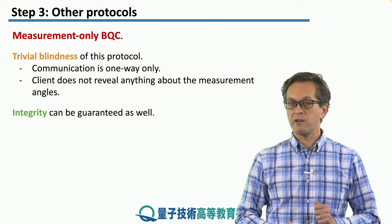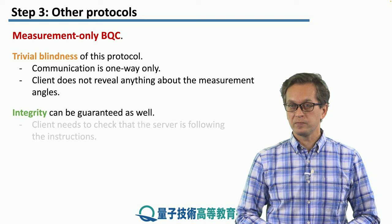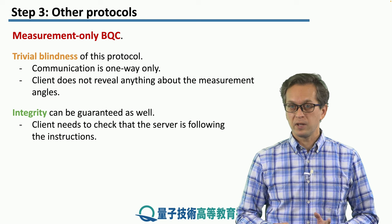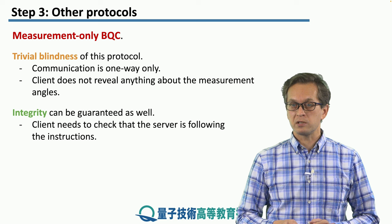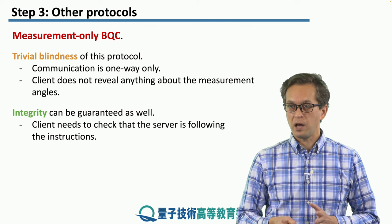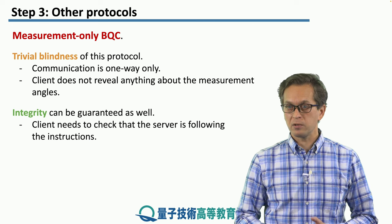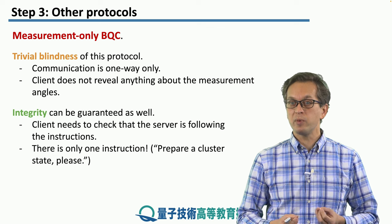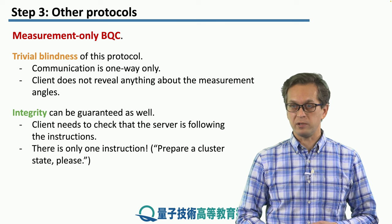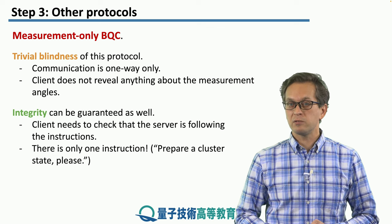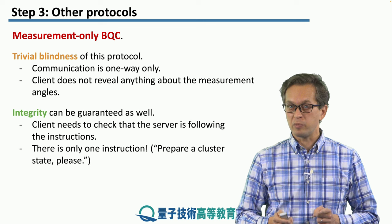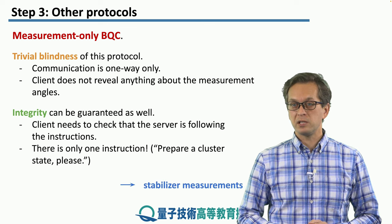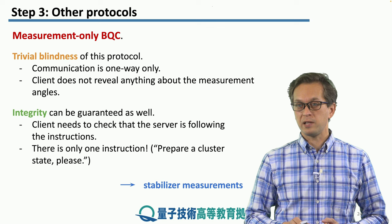Integrity of the data can be guaranteed as well. The client needs to check that the server is following the instructions. In this protocol the instruction is simple — there's only one: prepare a cluster state. So the client needs to check that the prepared state is indeed a cluster state, and that can be achieved with the help of stabilizer measurements.